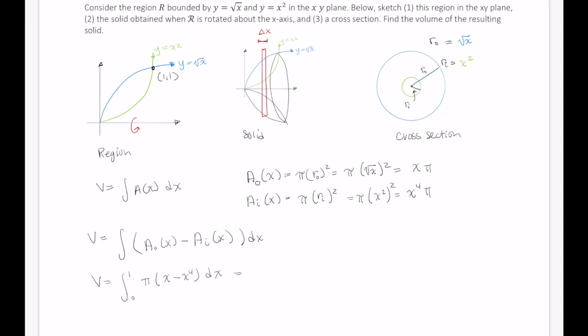And we have pi times x minus x to the fourth dx. So the value of this integral is pi times x squared over 2 minus x to the fifth over 5 from 0 to 1. So this becomes pi times 1 half minus 1 fifth. You end up with 3 pi over 10 units cubed.